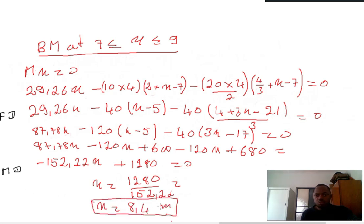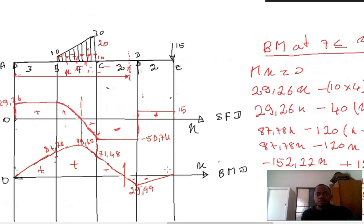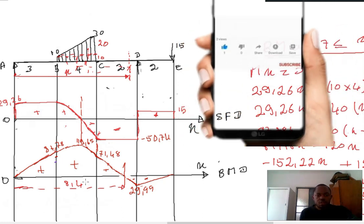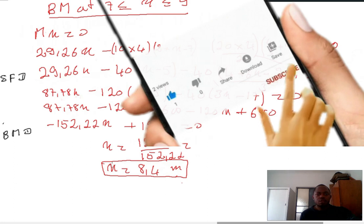Here is the position of the point of counterflexion. The distance from this point is equal to 8.4 meters.